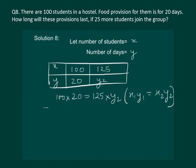And this implies 100 into 20 whole divide by 125 will give us y2. On solving we will get y2 is equal to 16. That means the provision will last for 16 days if 25 more students join the hostel.